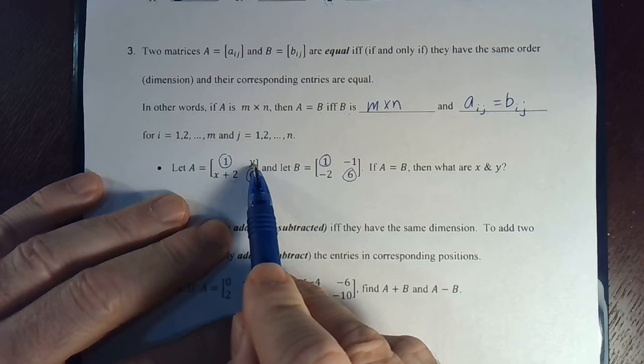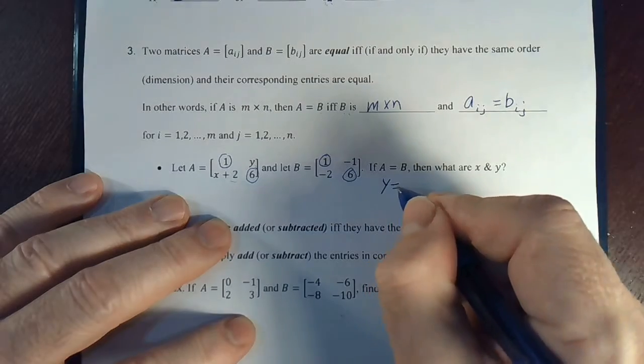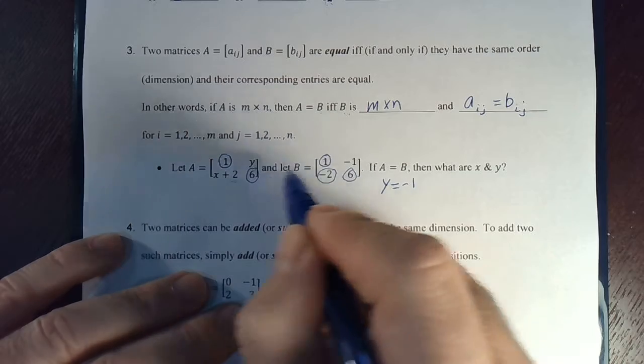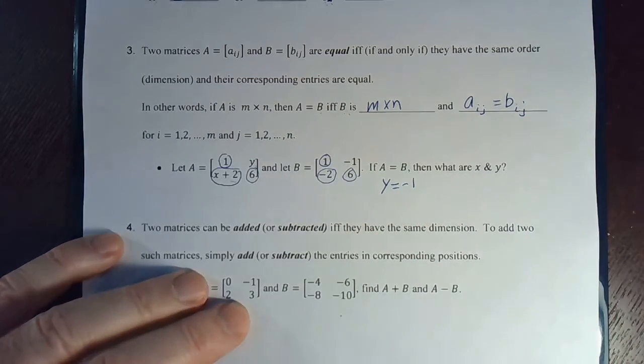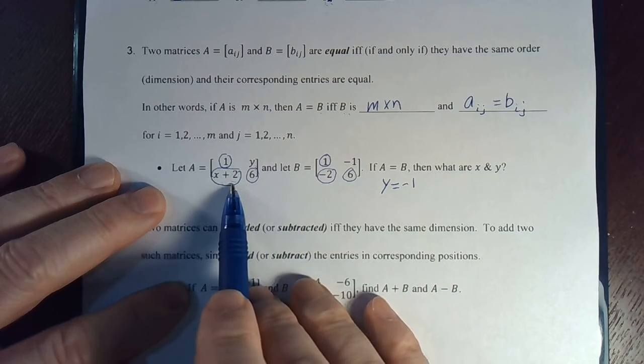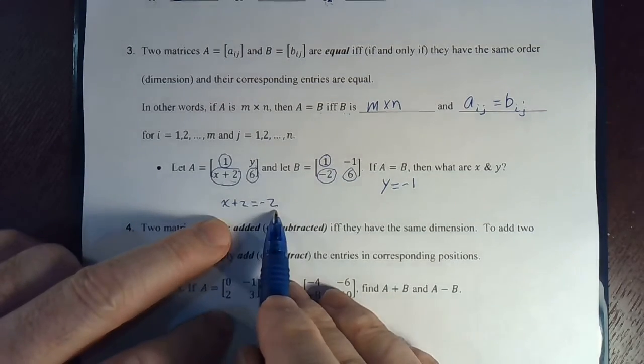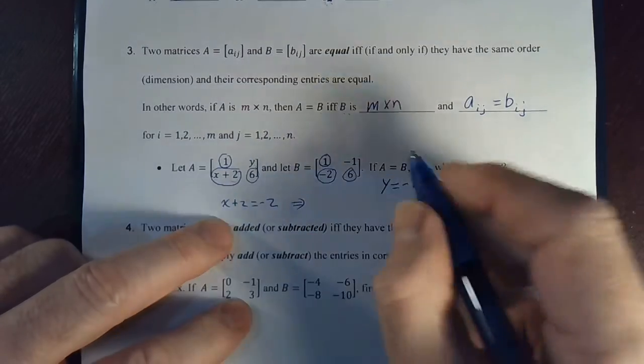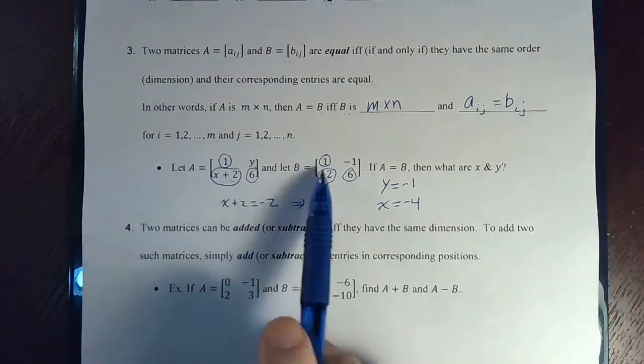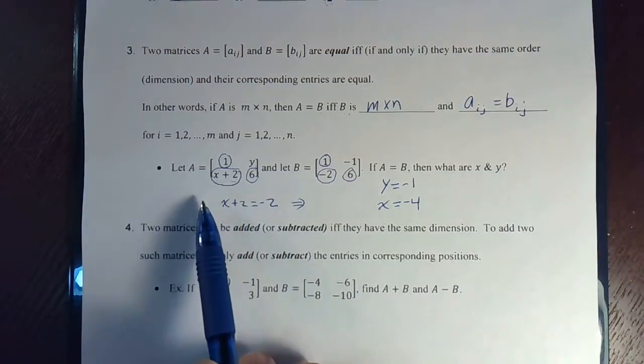Well, what would Y have to be if these matrices are equal to each other? It would have to be negative 1. So, Y has to equal negative 1. And then the corresponding terms here would be negative 2 and X plus 2. We have to set X plus 2 and negative 2 equal to each other to find out what X is. So, X plus 2 equals negative 2. We subtract 2 from both sides. And what does that give us? X equals negative 4. So, if those two matrices are equal to each other, we know that Y is negative 1 and X is negative 4.